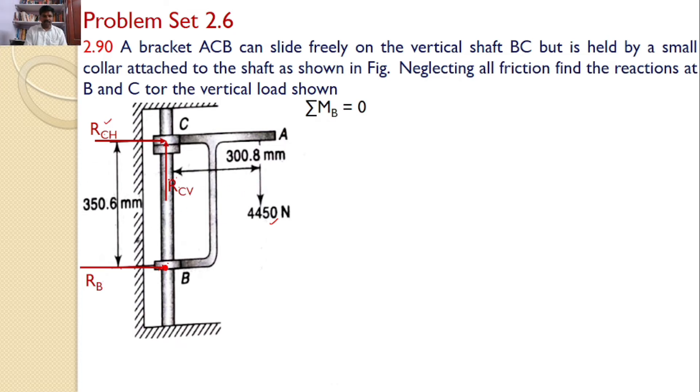Now, RCH line of action is at a distance of 350.6 from point B. This distance is given, and the 4450 line of action is also at a distance of 300.8. This distance is also given.